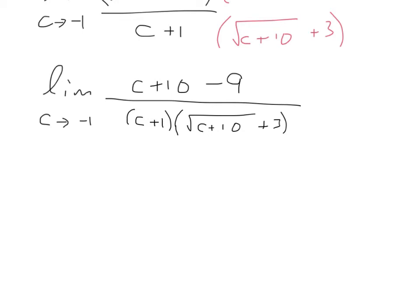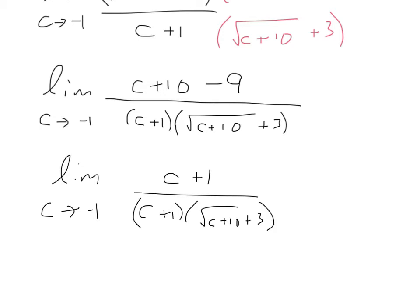The question is, can this really be simplified? Does this really get any nicer? The good news is that it does. If we look at what happens, this should be remarkable. We end up with c plus 1 on the top. Sure enough, that's the same as that c plus 1 factor that we left on the bottom. So we notice these two things will eliminate one another. All I have now is the limit as c approaches negative 1 of 1 over the square root of c plus 10 plus 3.